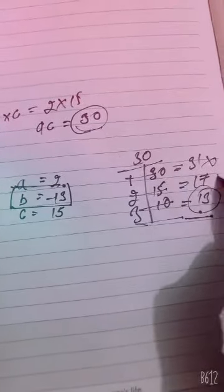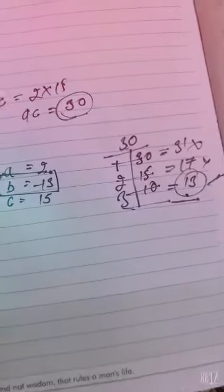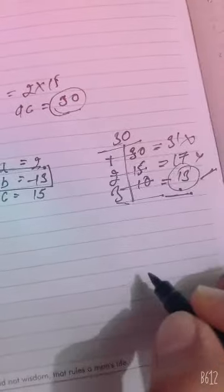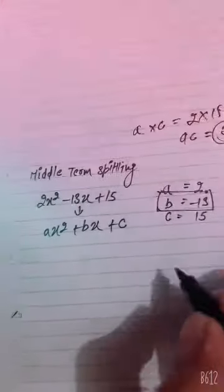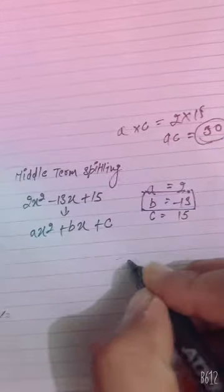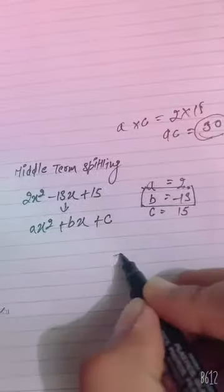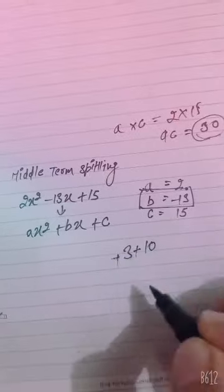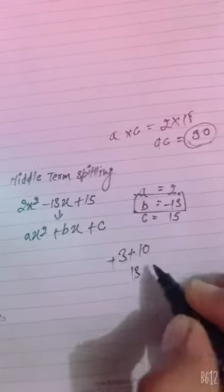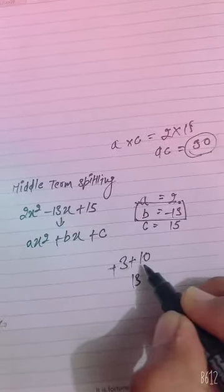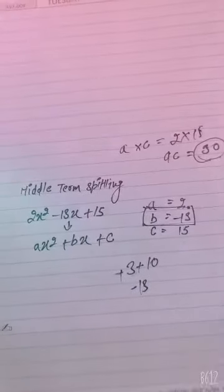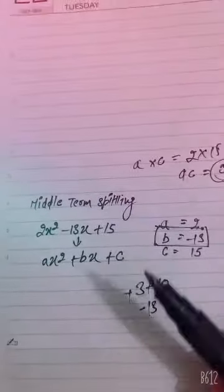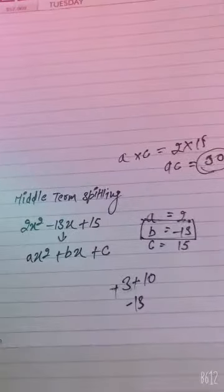We will use the pair 3 and 10, but the sign here is minus 13, and the product must be plus 30. So to make it minus 13, we will take minus 3 and minus 10. Minus 3 multiplied by minus 10 gives plus 30, and minus 3 plus minus 10 gives minus 13. Now we will put these values into the expression and factorize it further.